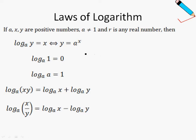For the second law, let me give you a numerical example. For example, log base 5 of 1 is equal to 0. This is true because a is not equivalent to 1. A can be any positive number, but not 1. The third law: log 2 of 2 for example is equals to 1. One more example, log 5 of 5 is equals to 1.